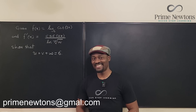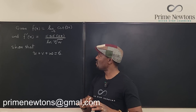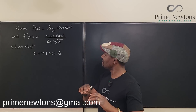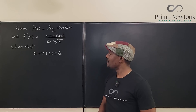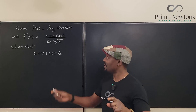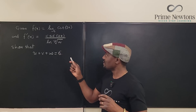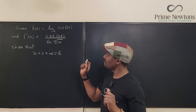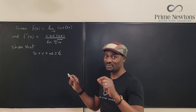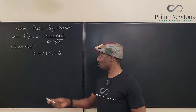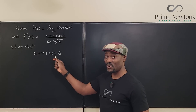Welcome to another video. Given f of x equals log base 6 of cotangent of 3x, and the derivative of this function is cosecant of ux divided by the vth root of w, we're supposed to show that u plus v plus w is equal to 6.